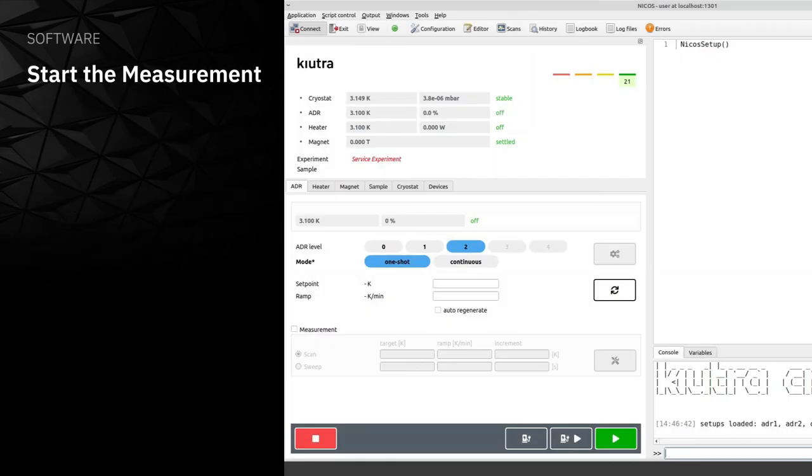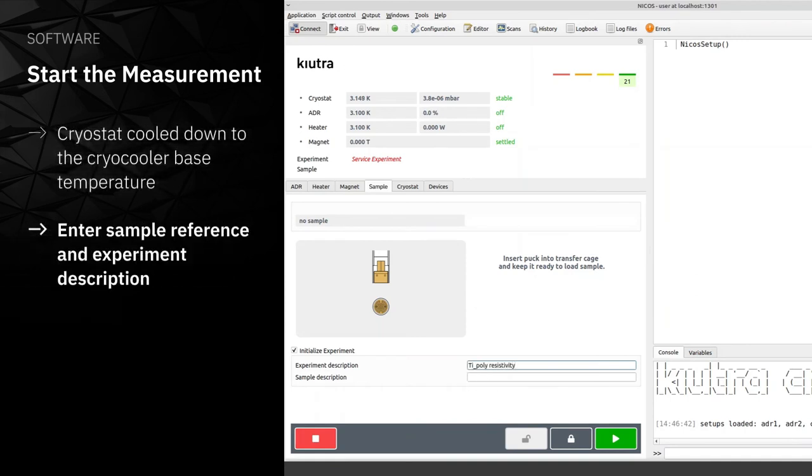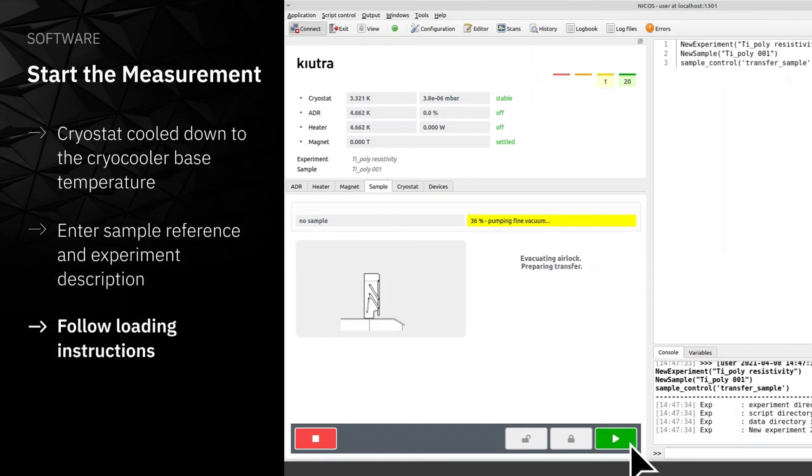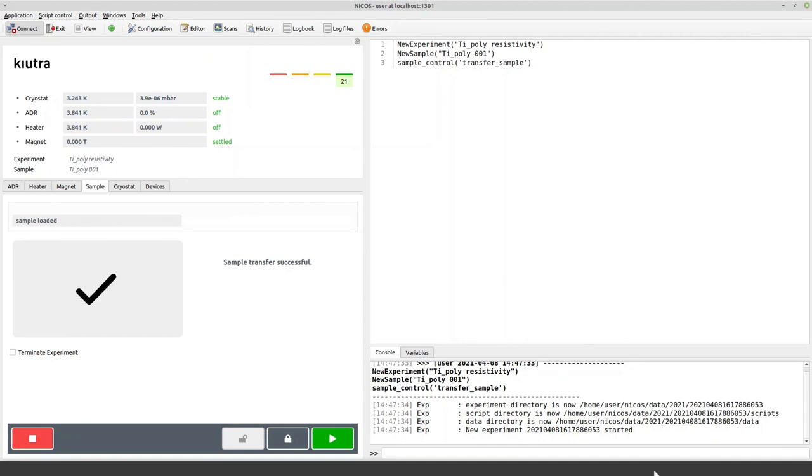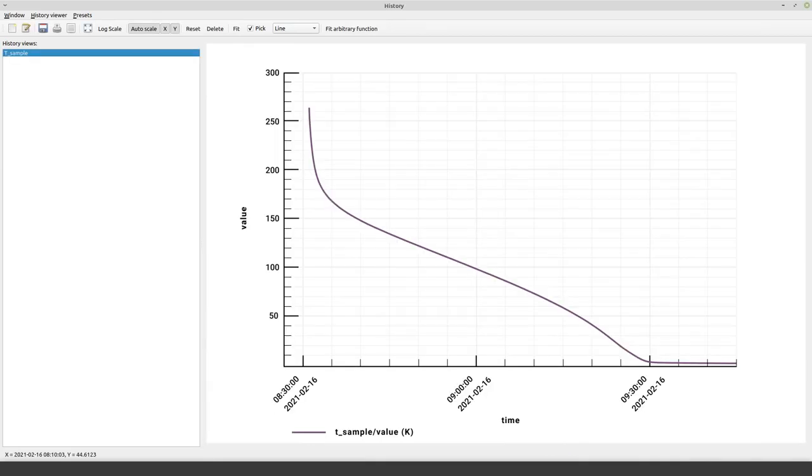So let's start an experiment. In our example, the Cryostat has been cooled down to the Cryo-cooler base temperature and we now want to start an experiment by loading our sample puck. We move to the Sample tab and enter a sample reference and experiment name. Then we hit the Load button and the software guides us through the sample loading process. After finishing the process, we can monitor the cooldown of the sample puck in the History Viewer. By navigating to History and selecting the appropriate time duration and thermometers, we monitor the cooldown of the puck until it thermalizes at the Cryo-cooler base temperature. This process takes around one hour.